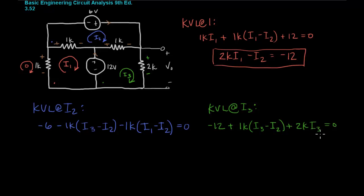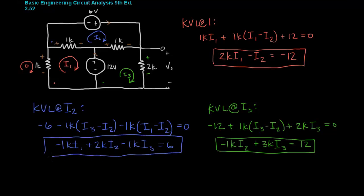So finally, oh, I forgot to put I2 in reduced form. Let's put I3 into reduced form and then we'll go back and do I2. So I3 will give us minus 1K I2 plus 3K I3 equals 12. That's the standard form. And then if we reduce I2, we'll end up with minus 1K I1 plus 2K I2 minus 1K I3 equals 6. So now we have our three KVL equations. We have three equations and three unknowns.